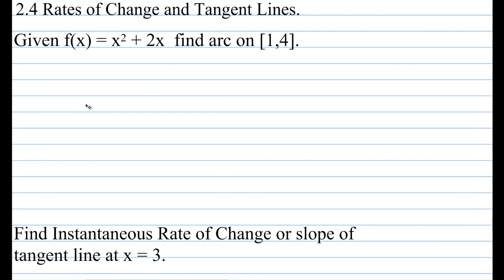In section 2-4, we are going to look at the difference between what's called an average rate of change and an instantaneous rate of change. In the first example, we are asked to find the average rate of change. Given f of x equals x squared plus 2x, find the average rate of change on 1 to 4. The average rate of change is how far we've gone and how much time it has taken, where the function represents distance traveled after a certain amount of time.